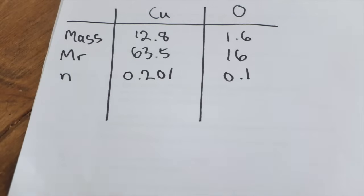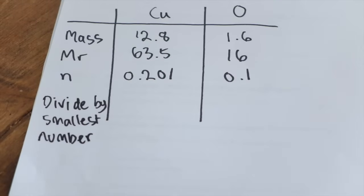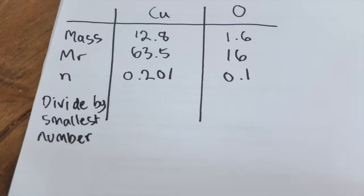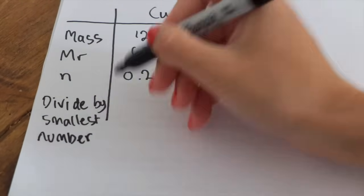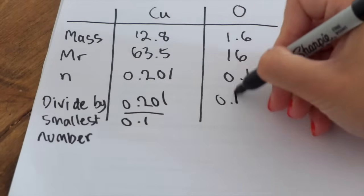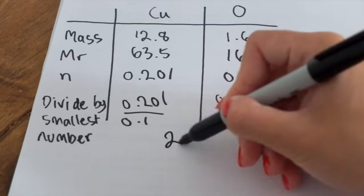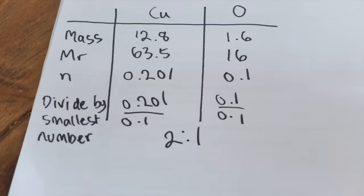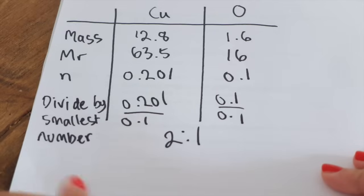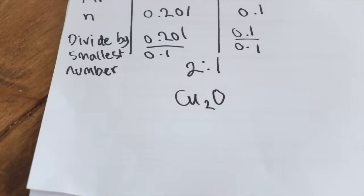What you want to do now is divide by the smallest number — in this case that will be 0.1. Divide both sides by 0.1 and you get your ratio, which is 2 to 1. Now lots of people think that's the final answer — it isn't. You need to actually give an empirical formula, which in this case will be Cu₂O.